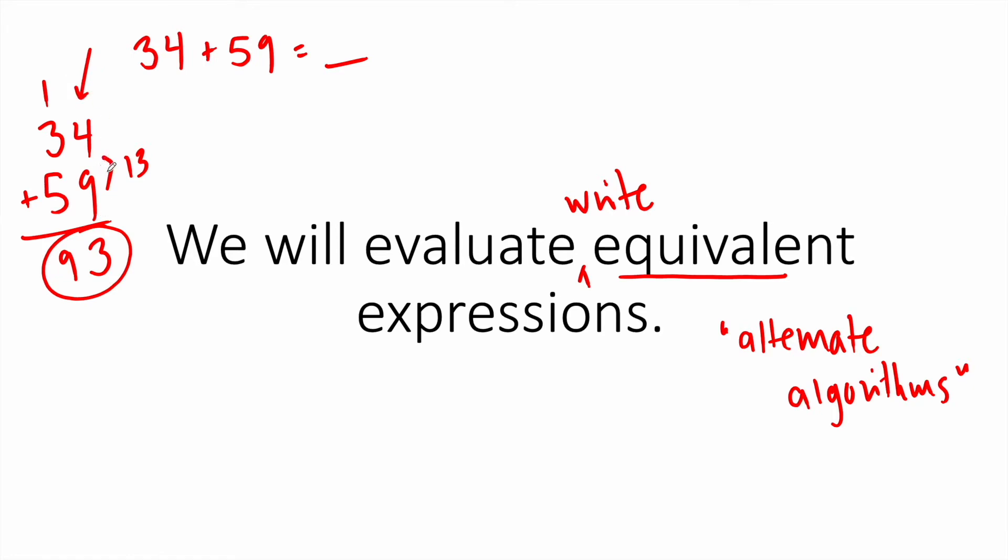But if you think about us as adults, if we see this problem in our head when we're at the grocery store, we don't always have a pen and paper. And most of us probably don't do mental math by stacking tens with tens or ones with ones. One way some of us might add this is we might think of it as 30 and 40, which makes 70. We might think of it as 4 and 9, which makes 13, and then 70 and 13.